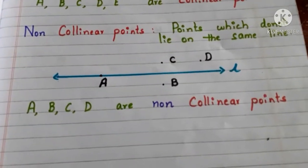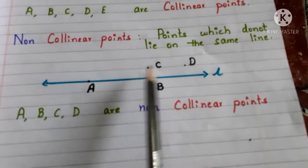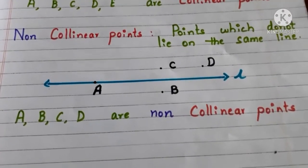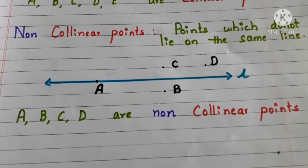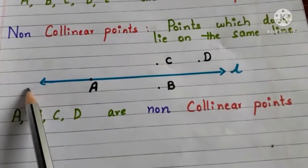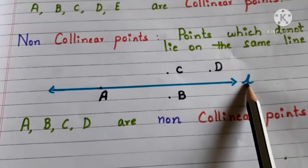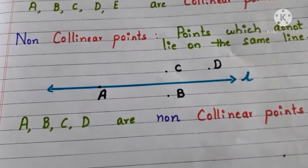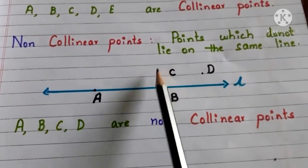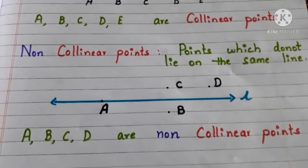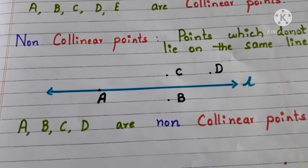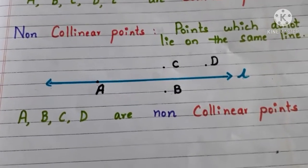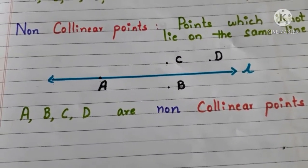Now let us move to non-collinear points. Points which do not lie on the same line are said to be non-collinear points. Here we have a line L and we have points A, B, C, D. But these 4 points are not on the same line L. So, A, B, C and D are said to be non-collinear points.